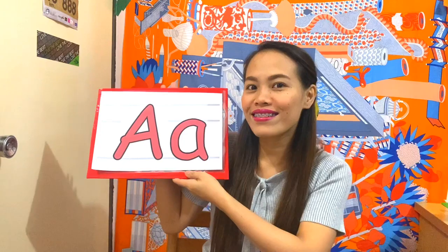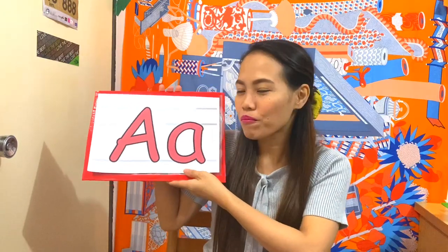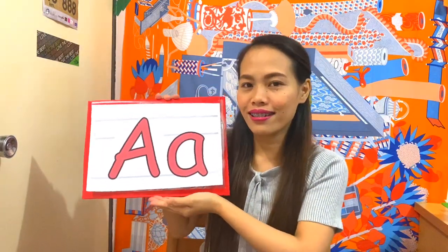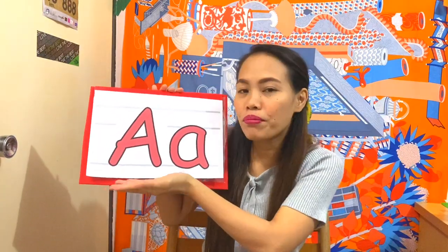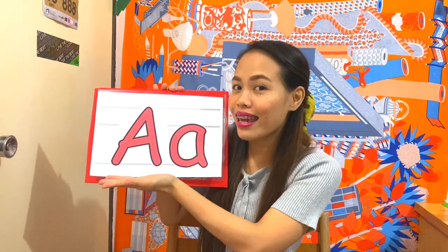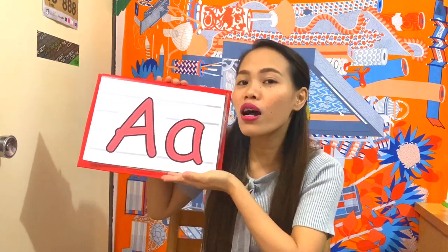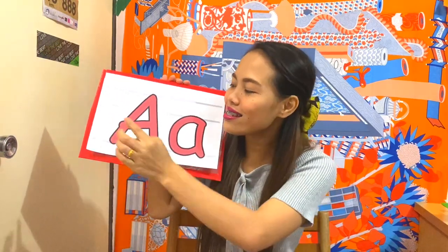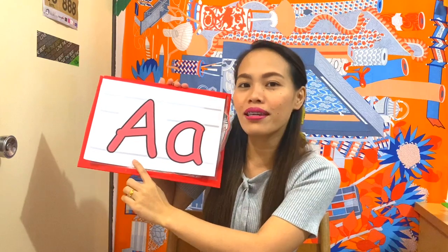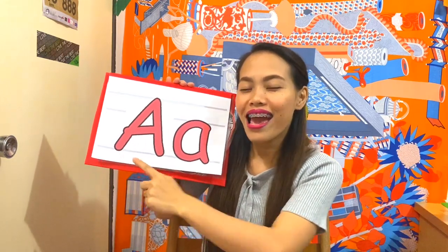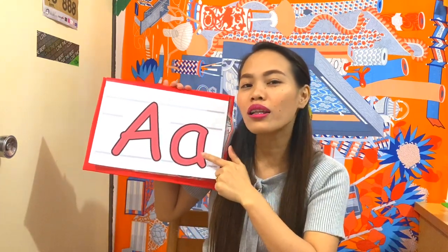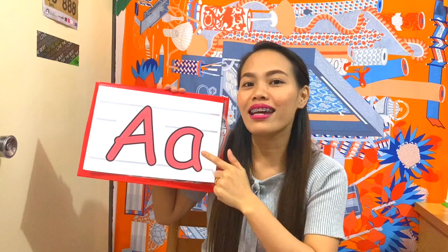So now, are you ready to listen? Okay, so let's start. Oh, what can you see? It's a letter. And there's a big letter A, and there's a small letter A. This is the big letter A, and this is the small letter A.